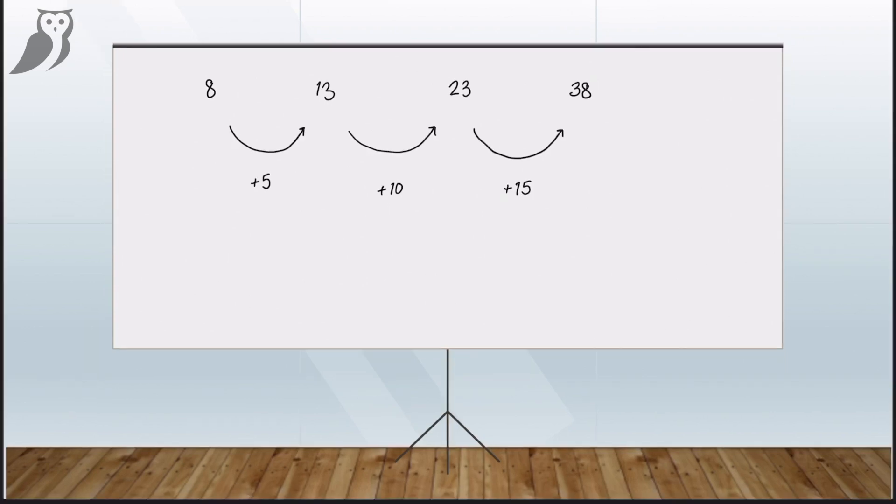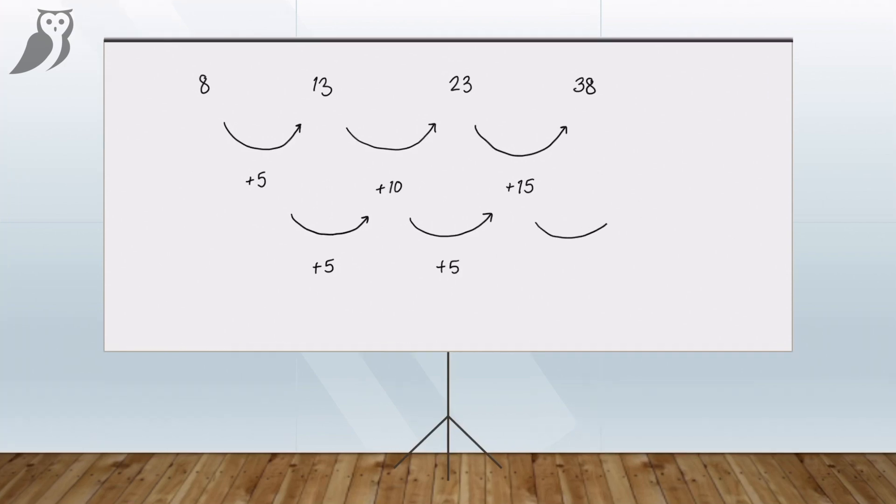Do you note the pattern? As you can see, the numbers of the sequence go up by increasing multiples of 5 each time. So in this pattern, there is a common second difference of plus 5. So to work out our next number, we add 5 to 15 to give us 20. And we add that to our original number in the sequence, 38, to give us 58. And that is our next number.